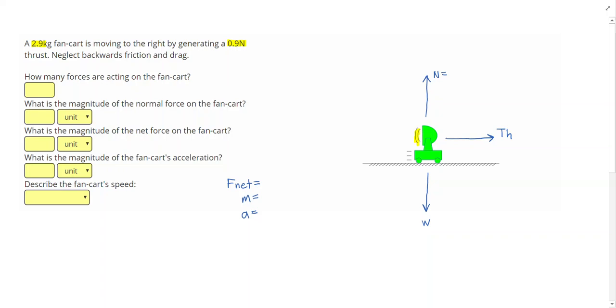Notice in the problem it says to neglect backwards friction and drag. Otherwise we'd have both of those to the left. So that gives us a total of three forces acting on the fan cart.